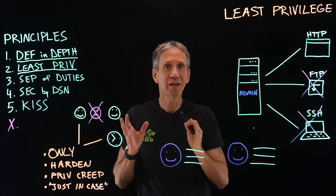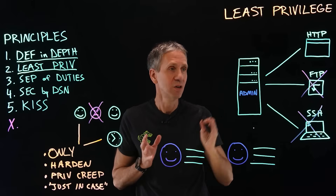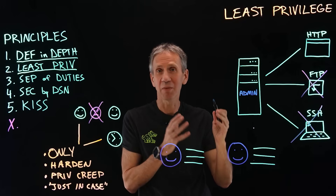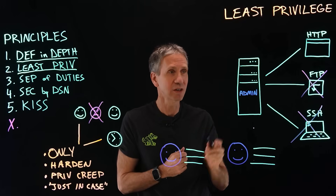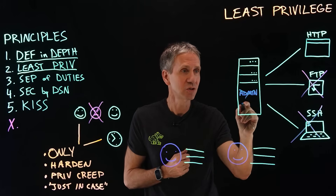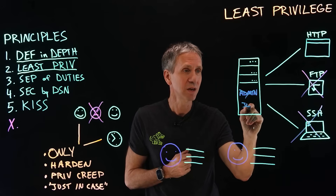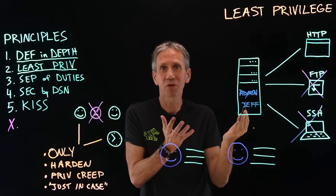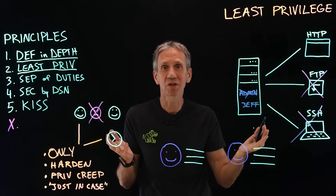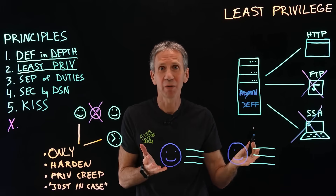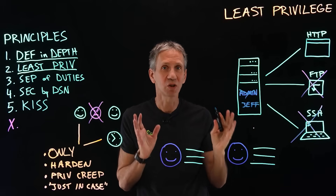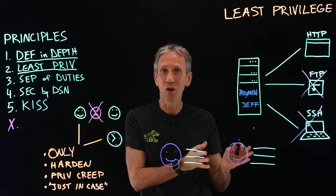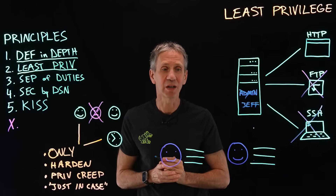Another hardening example is to remove all unnecessary IDs on the system and change the names of the IDs we do keep from their defaults. For instance, if the administrator ID out of the box is 'admin,' let's change that — make it something more specific. Change all the default passwords. We don't want the system in a vanilla configuration, because the bad guys will know what that is and they'll know how to break in.